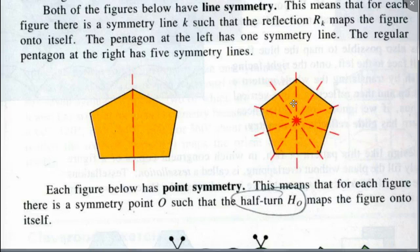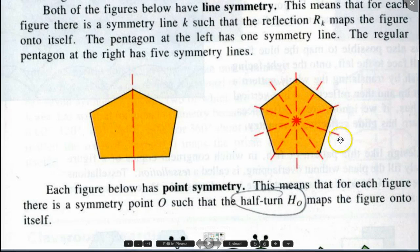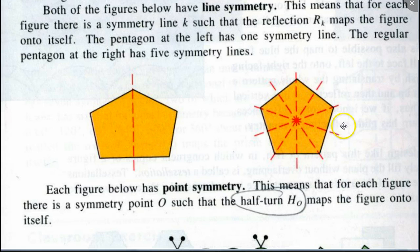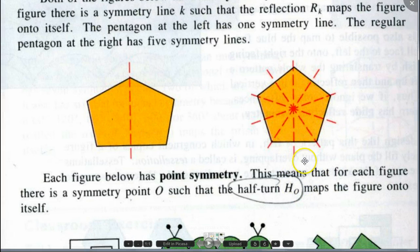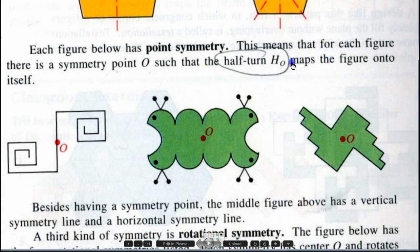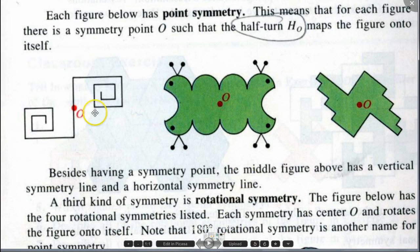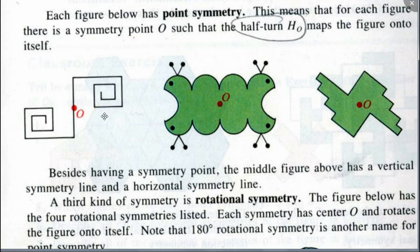When you do a half turn, it can't be just any angle — it has to be 180 degrees. So it turns out I said it wrong. This one doesn't have a point of symmetry. But the ones on the bottom here do. As you can see, if you were to do a half turn around O, all three figures down here will map onto itself.